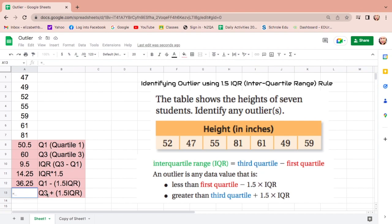Here, equals, Q3 is 60, click, plus, 1.5 IQR is 14.5, click, enter.